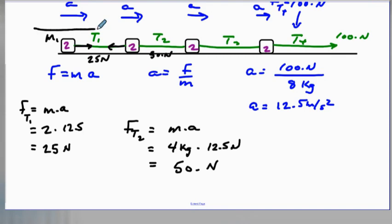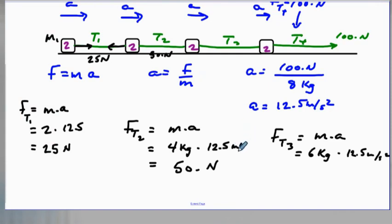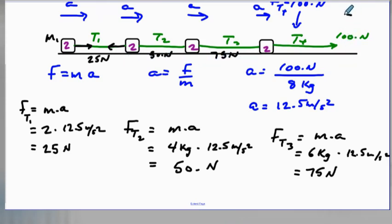T3 has to move all three of the rear cars, so the force of tension T3 is mass times acceleration: 6 kilograms times 12.5 meters per second squared equals 75 newtons. As we get closer to where the applied force is, the tension gets larger — T1 is 25 N, T2 is 50 N, T3 is 75 N, and the applied force is 100 N — showing that tension increases as more cars are being pulled.